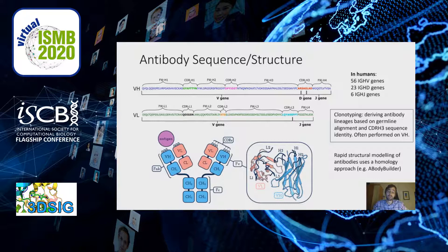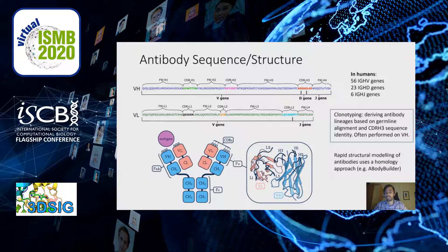A common way to analyse antibody repertoires is clonotyping, which derives antibody lineages within the immune response. It identifies antibodies sharing the same V and J genes with over a certain percentage of CDRH3 sequence identity, allowing you to identify expanded clones selected through affinity maturation and antibodies responding to a pathogen of interest after vaccination. Comparing clonotypes across repertoires can infer functional equivalence. Beyond sequence, you can get a sense of three-dimensional structure using homology modelling approaches such as ABodyBuilder or RepertoireBuilder, which are crucial for structural characterisation at the scale of a full immune response.